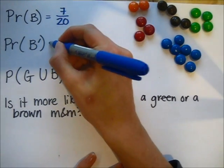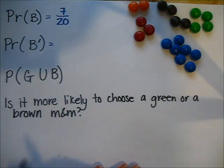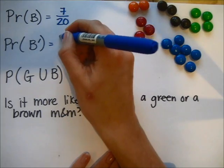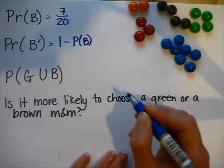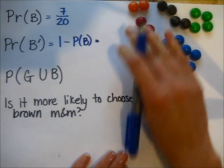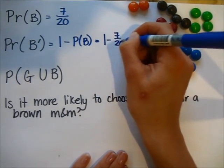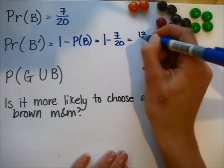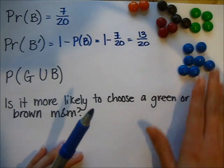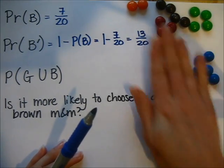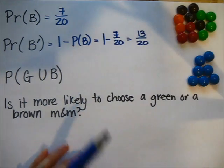The next question: what's the probability I don't choose a blue? That's the complement, so I do 1 minus the probability of choosing a blue. That's 1 minus 7 twentieths, which is 13 twentieths. That makes sense because if I take 7 away from 20, there are 13 other M&Ms I could choose that are not blue.